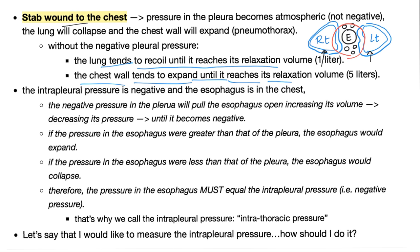Now, how do you measure intrapleural pressure practically in the lab? A stupid suggestion would be to insert a needle into the pleura — that would cause pneumothorax. Instead, you measure the intraesophageal pressure using an intraesophageal balloon. You insert a tube into the patient's mouth or nose into the esophagus, measure the pressure there, and since it equals the pressure inside the pleura — voilà. That's why we call it intrathoracic pressure. Thanks to the negativity of the intrapleural pressure, it helps with venous drainage and venous return from your legs up to your heart.